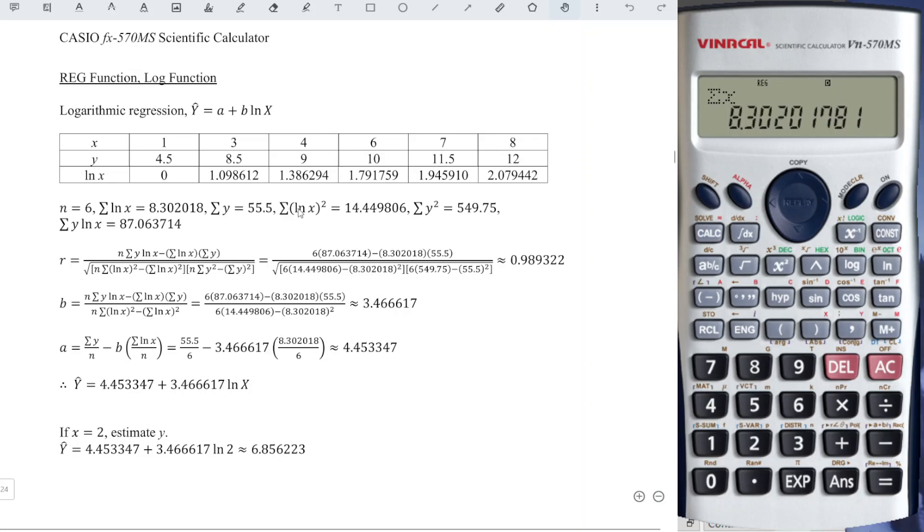And so for summation of LN(x) squared, then we press Shift 1 again. And this time we should press 1 and we obtain the value. For the rest of the summations, we also get it from Shift 1. We just have to press the right button and choose the number accordingly. If you want this value, then we choose 1 and press equal and so on.